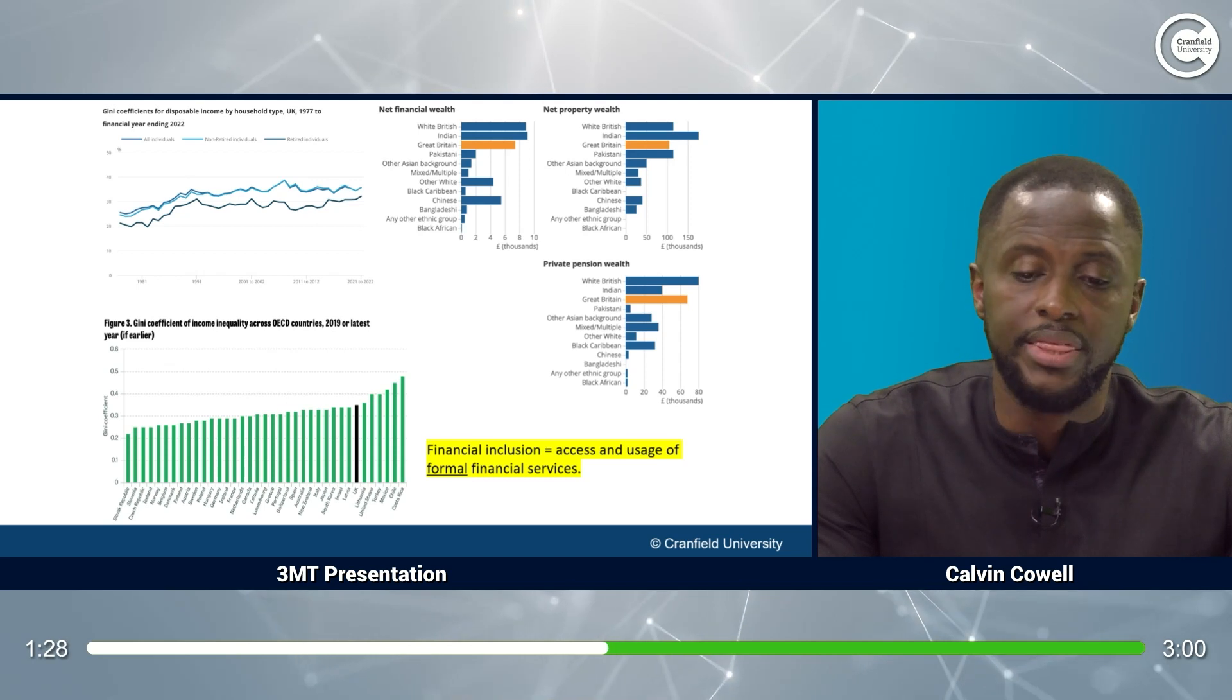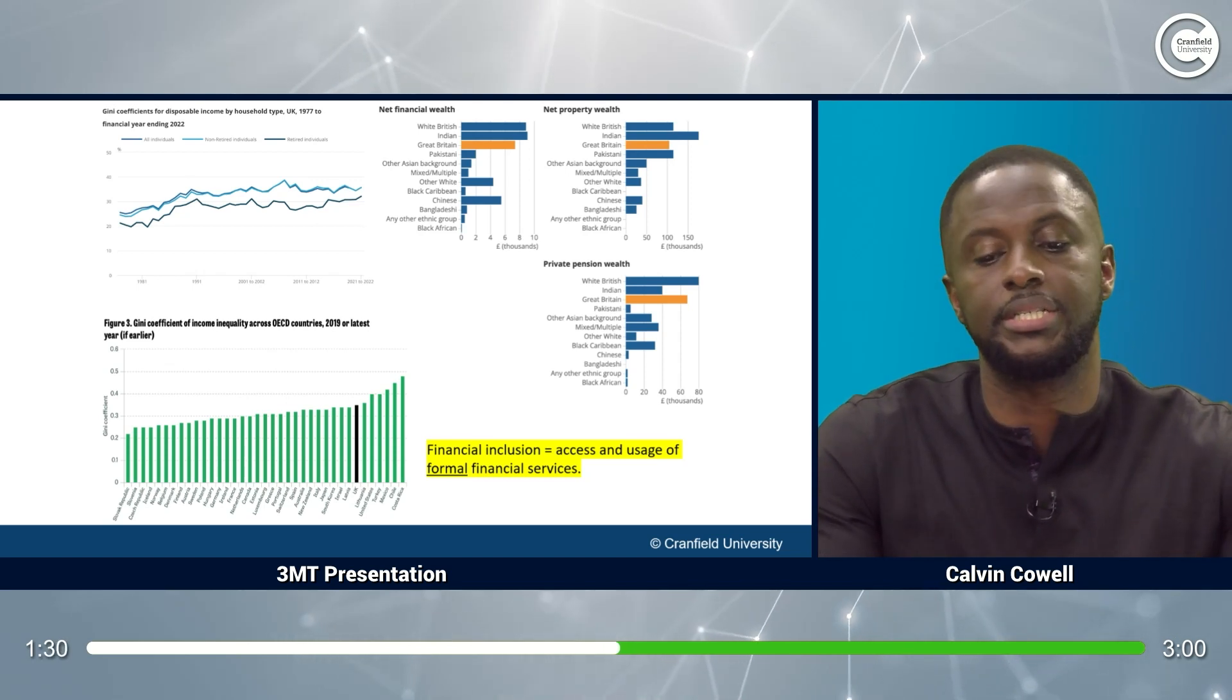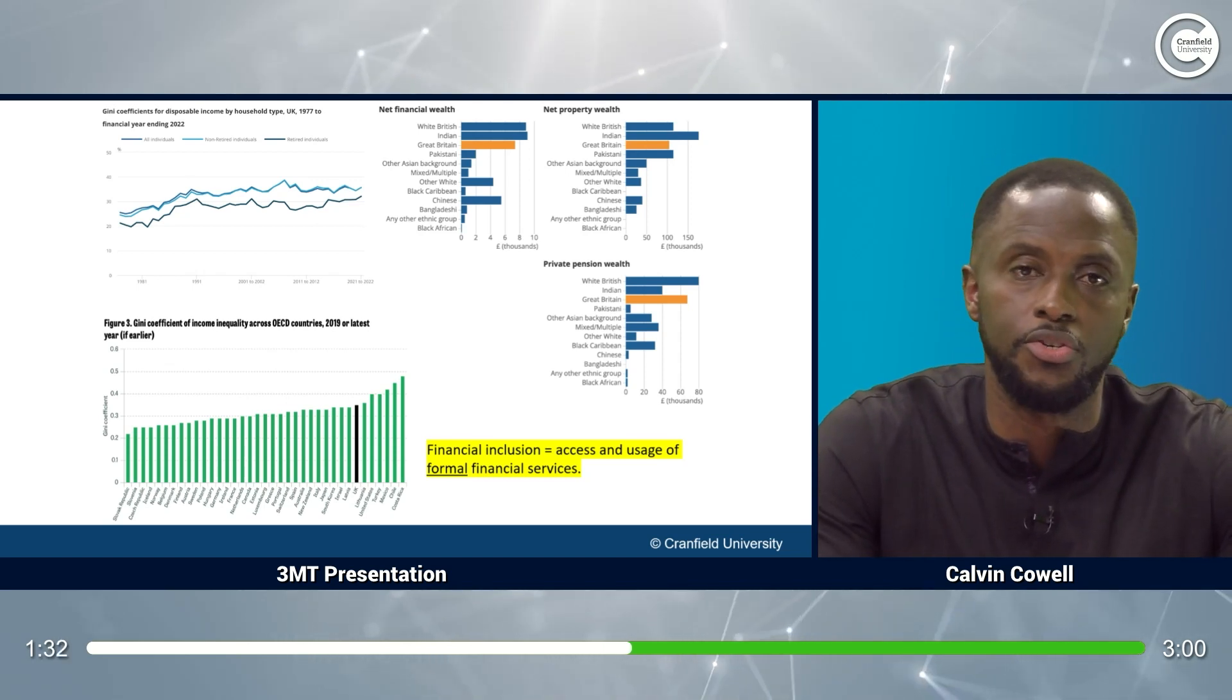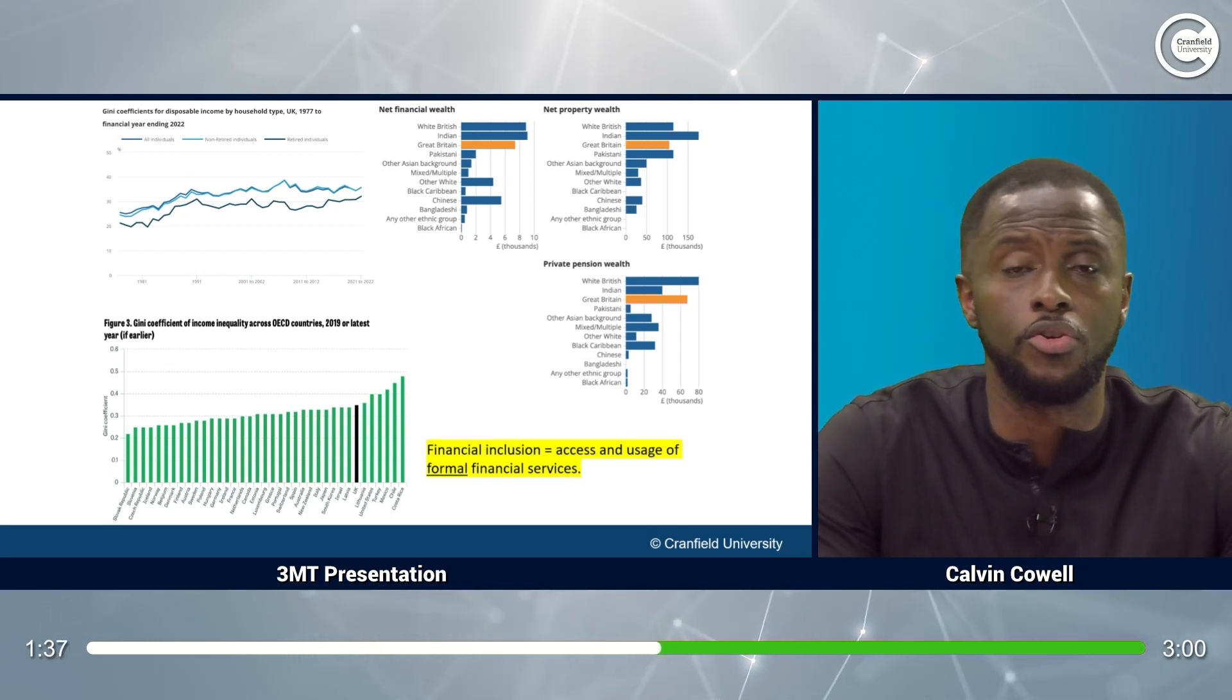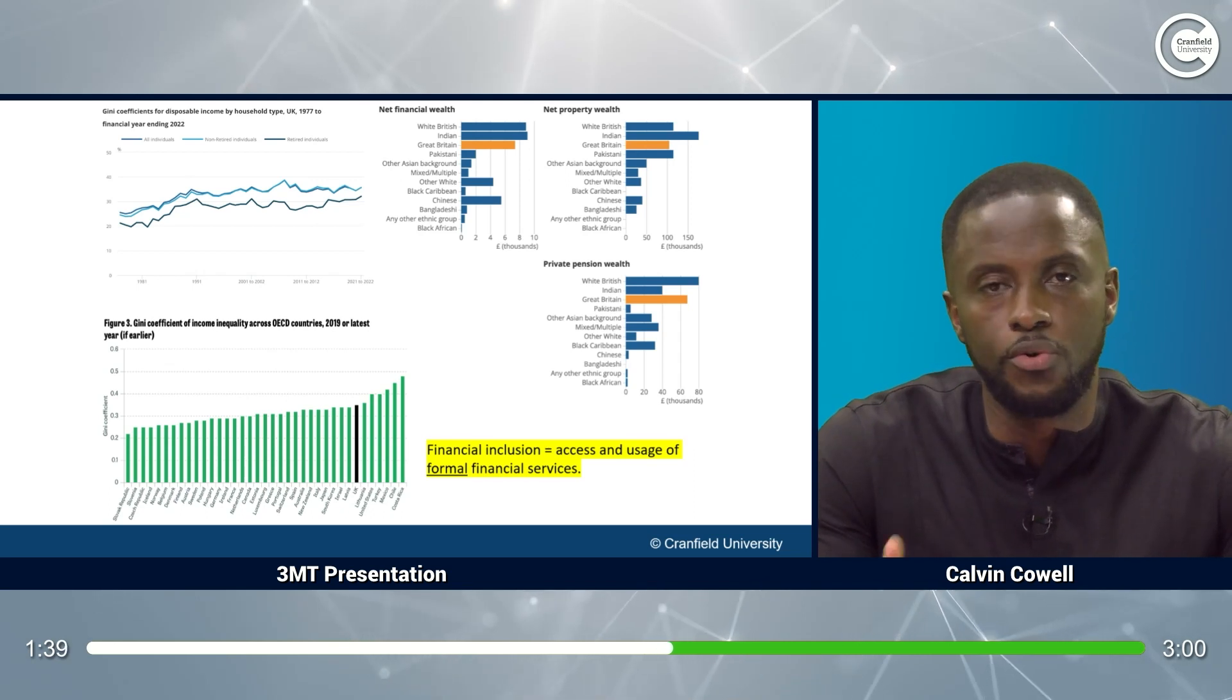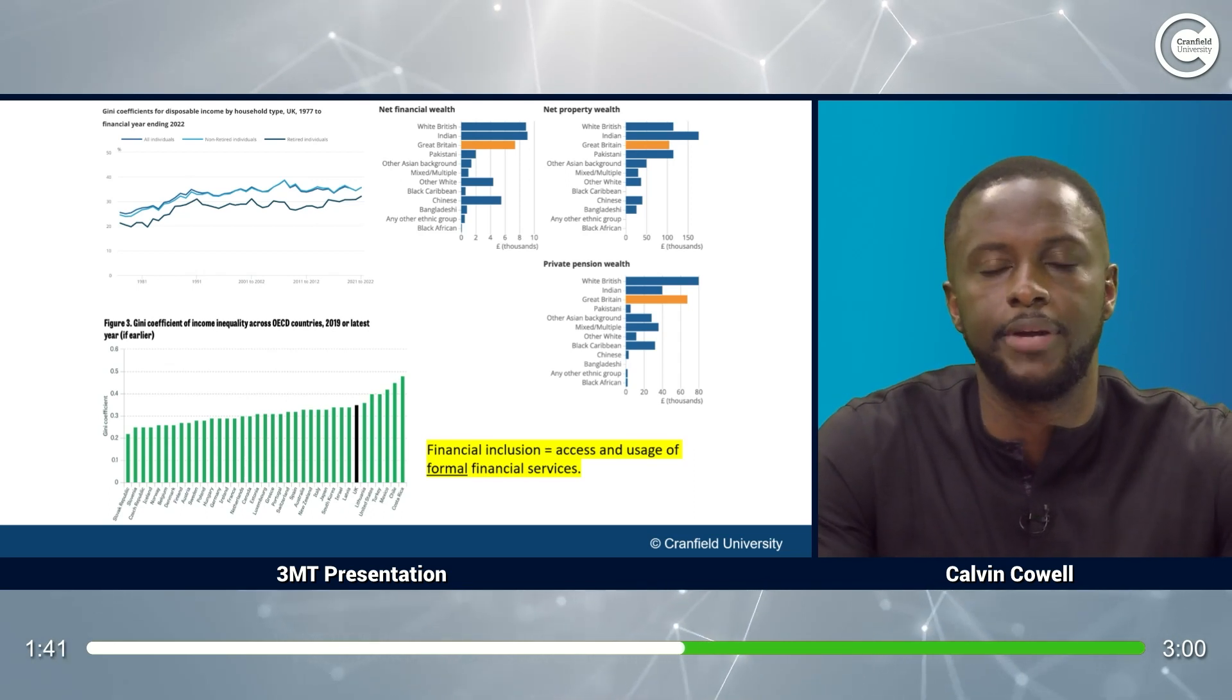Furthermore, there is a lack of heterogeneous data relating to financial inclusion in the UK, and as such, policymakers often take the scattergun approach to addressing financial inclusion rather than focusing on those communities and groups that need help the most.